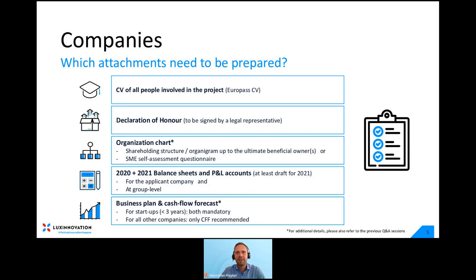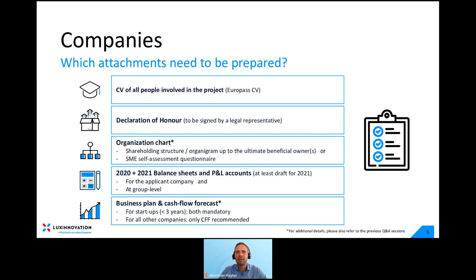For companies, the list of mandatory attachments is a little longer. Your company would need to submit a Europass CV for all people working on the project and a signed declaration of honor. In addition, you would need to prepare a full legal organization chart of your company and the group it might be part of. To assess the size of your company, it is important that this chart is complete and reflects all linked and partner companies, as well as the ultimate beneficial owners. You would also need to submit the 2020 and 2021 annual accounts for both the applicant company and the group. If you don't have consolidated accounts at group level, we highly recommend submitting the accounts of all linked companies.